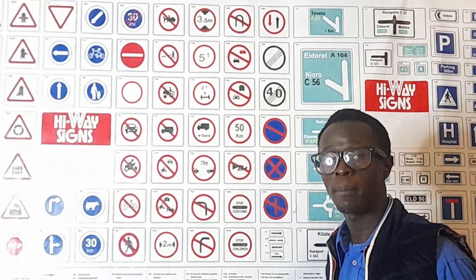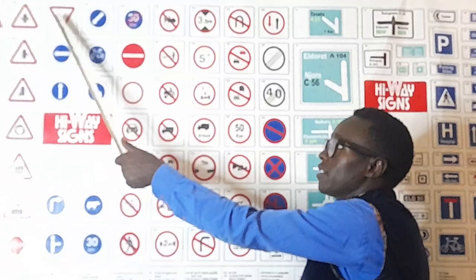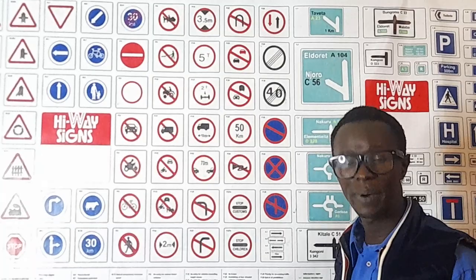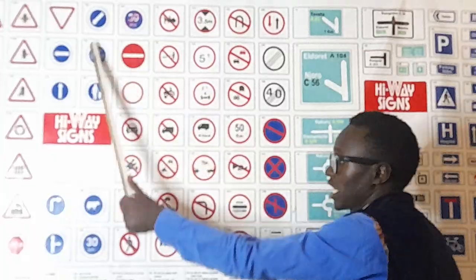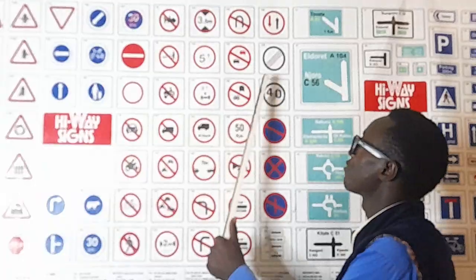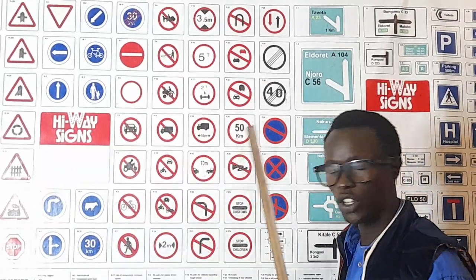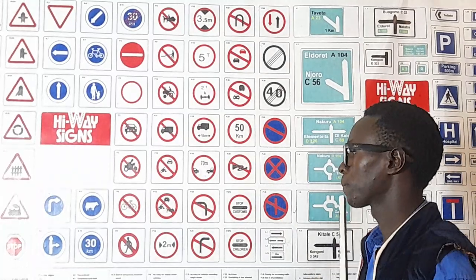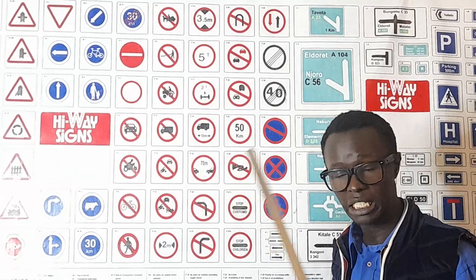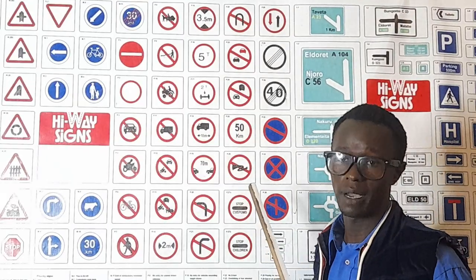Number one, we call them priority signs, which are stop sign and give way signs. Number two, we call them mandatory or compulsory signs — they are blue in color and circular in shape. Number three, we call them prohibitory signs — they are circular in shape and red in color. Remember to subscribe, like, comment, and ask me any question.